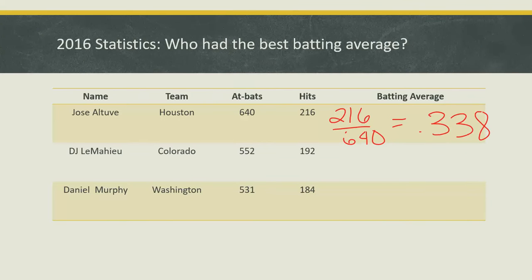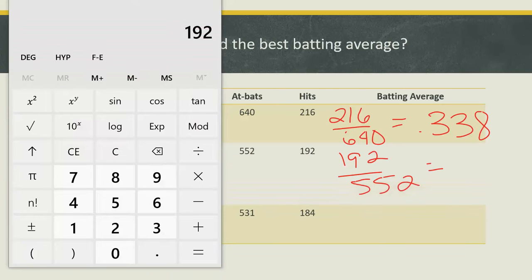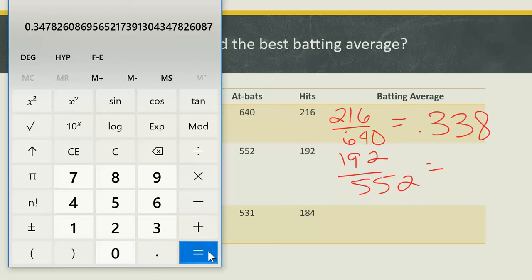Next, let's look at DJ LeMahieu from Colorado. He had 552 at bats and got 192 hits. His batting average will be 192 divided by 552, which equals 0.347826. We want three decimal places, so we look at the eight to the right of the seven, which makes us round up, giving 0.348.